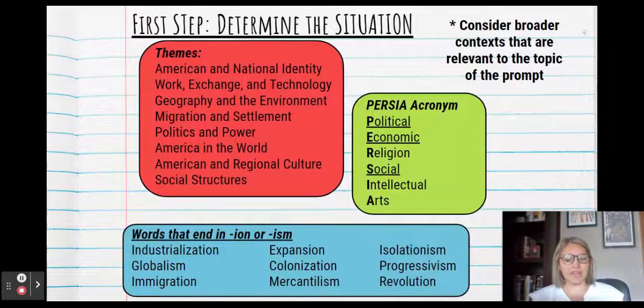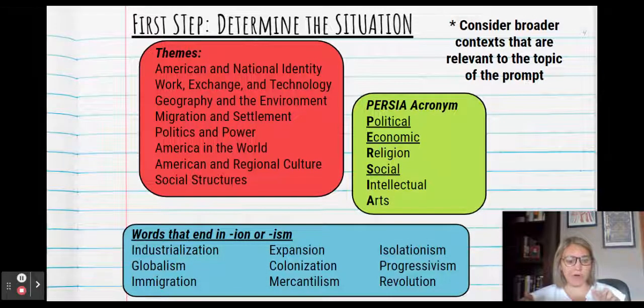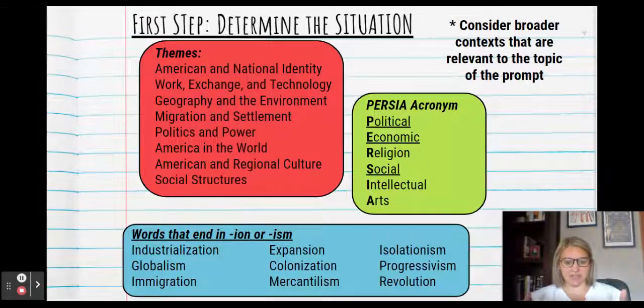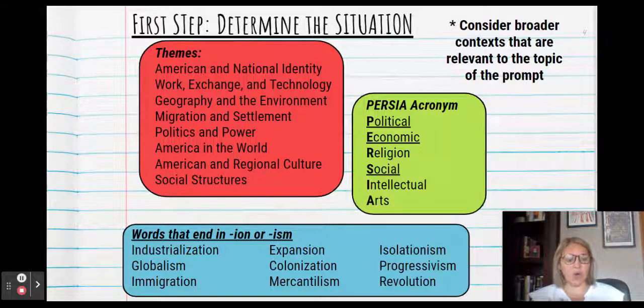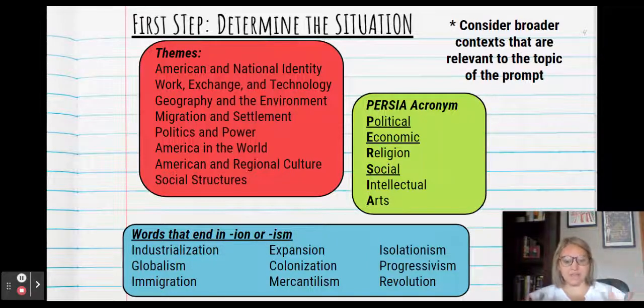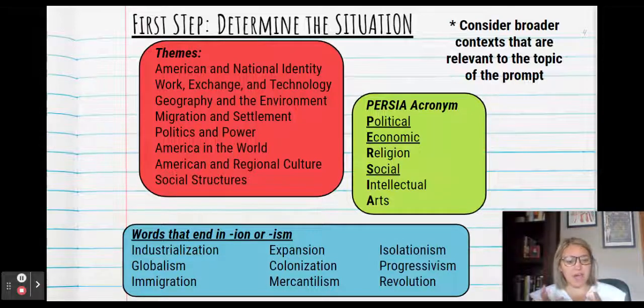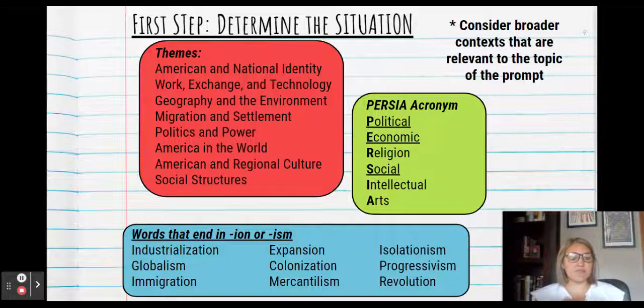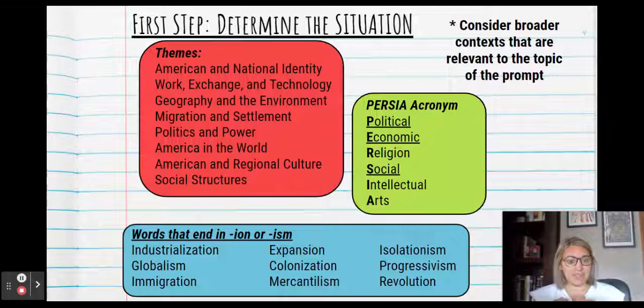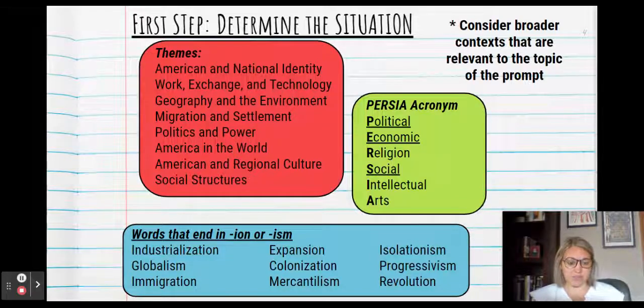For students that don't quite grasp these ideas, I tell them to just brainstorm words that end in ION or ISM. So I've listed nine examples, but there's numerous others here. Expansion. This is a theme that happens throughout history, and it's one that can be relevant to a whole variety of prompts. Colonization, revolutions, immigration, globalism, all of these are huge, broad contexts that relate to a variety of prompts. So if you can brainstorm some of these words, that might help you think about something that's relevant to the prompt.